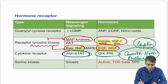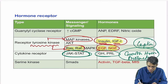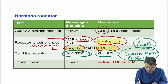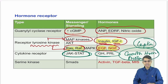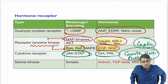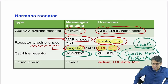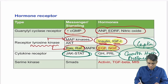Also important: atrial natriuretic peptide (ANP), endothelium-derived relaxation factor (EDRF), and nitric oxide act through the cGMP pathway (guanylate kinase pathway). These have also been asked in MCQs.